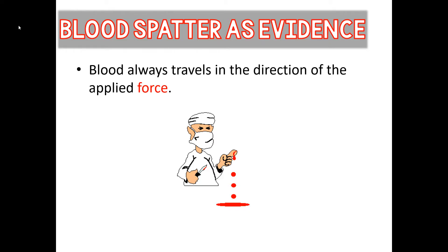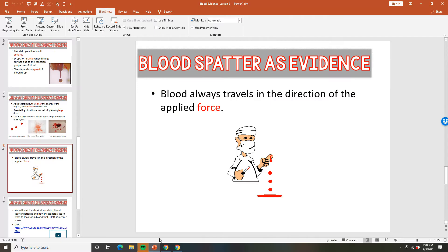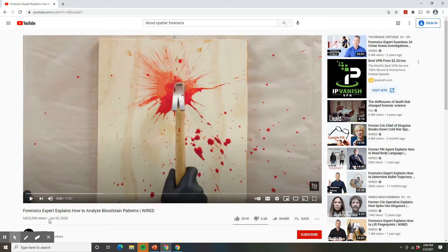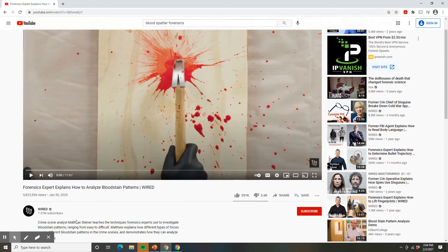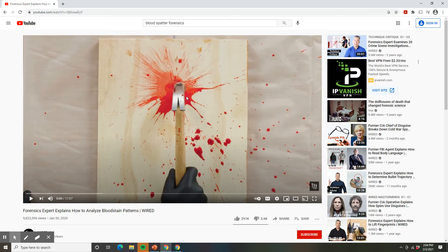To finish out this lesson, head over to YouTube and search WIRED — search for 'Forensic Expert Explains How to Analyze Bloodstain Patterns.' It's a 17-minute video that does a really good job of showing how different patterns are created at crime scenes. They'll walk you through passive stains versus velocity spatter, the difference between impact spatter and cast-off spatter, transfer stains, and what those look like. Watch that 17-minute video and I will see you in the next lesson.